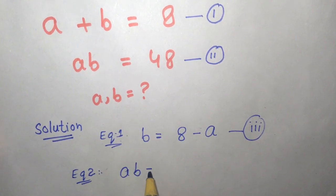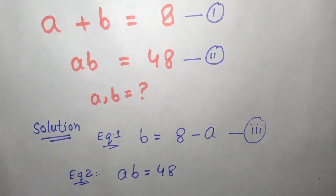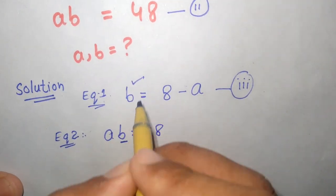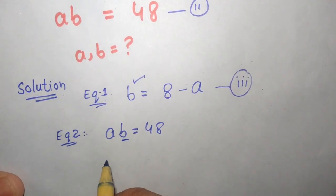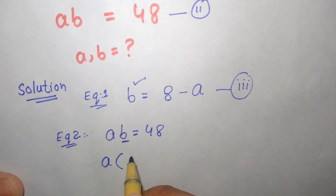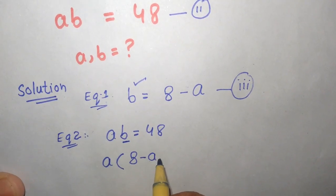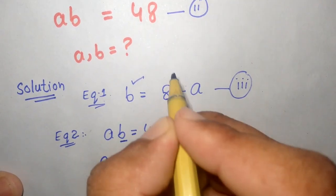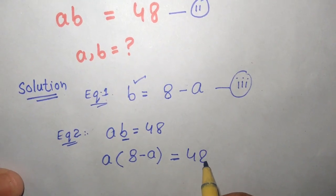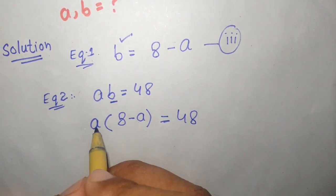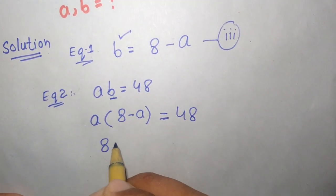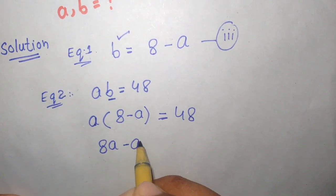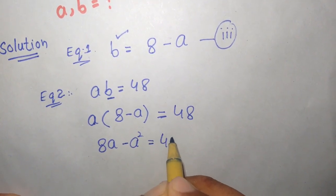From equation number 2, a times b equals 48. We substitute the value of b, which is 8 minus a. So a times (8 minus a) equals 48. Expanding: a times 8 is equal to 8a, and a times minus a is equal to minus a squared, which gives 8a minus a squared equals 48.